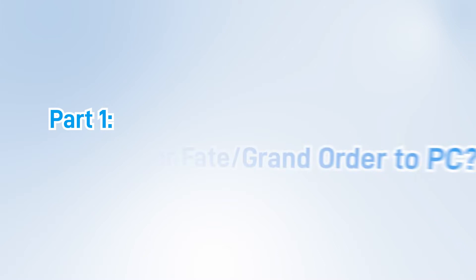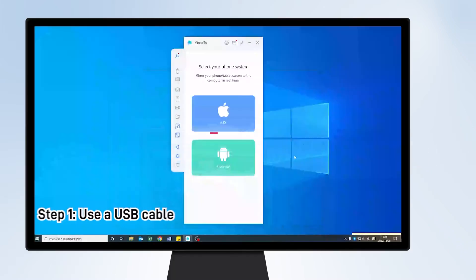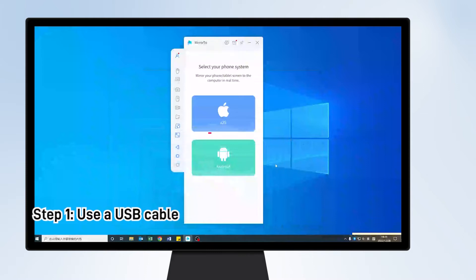Part 1: How to Mirror and Play Fate Grand Order on PC. Step 1: Download iMyPhone Mirror 2. Use a USB cable to connect your phone and computer.